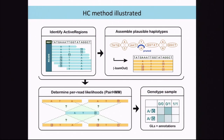Here's the method for HaplotypeCaller — we have four main steps. The first is identifying active regions. The second is assembling plausible haplotypes. The third is determining per-read likelihoods of those haplotypes using a pair HMM. And the fourth step is to genotype the sample.